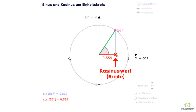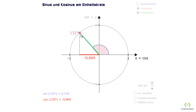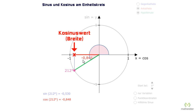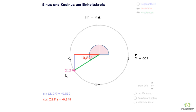Since the hypotenuse is 1, we can always read the cosine value as the length of the adjacent, or on the x-axis. Cosine of 56 degrees is 0.559 rounded. Let's go over 90 degrees, and you see the cosine value is negative. And now we go over 180 degrees, you see the cosine value is still negative. So remember, to read off the cosine value, look directly at the x-axis from the point and read the x value there. Look for sine on the y-axis. Cosine of 212 degrees is minus 0.848.